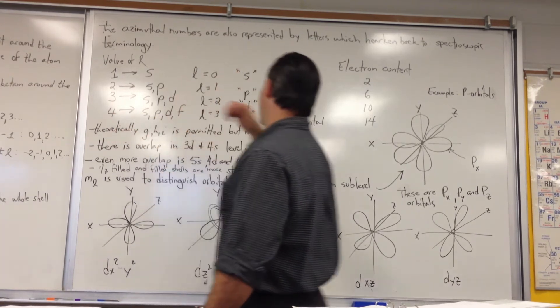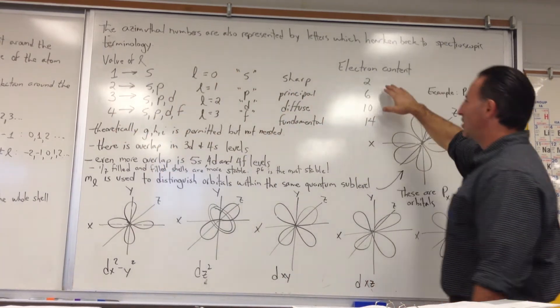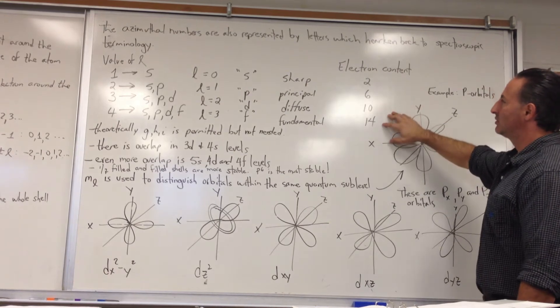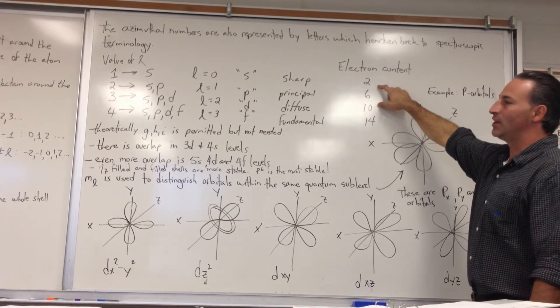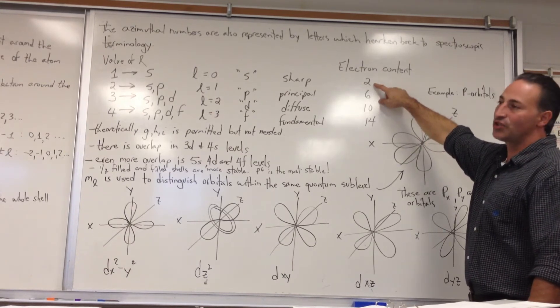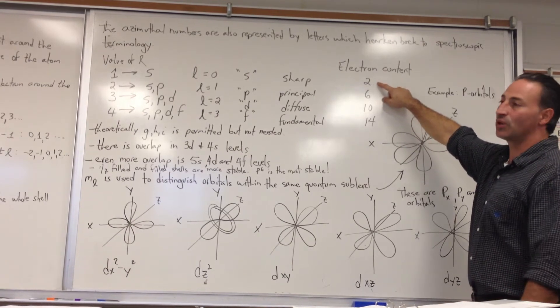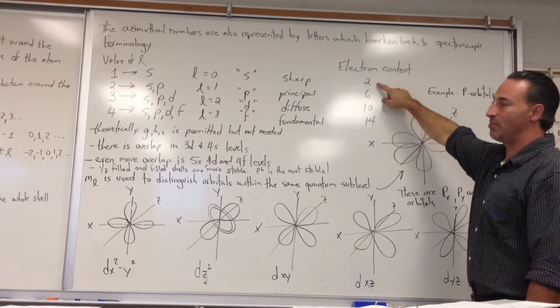And if it's four, it's S, P, D, or F. And you'll see that the electron content of each shell is limited by the number of possible geometric orientations it has. A spherical shell only has one orientation, so there's only two electrons that can occupy it.